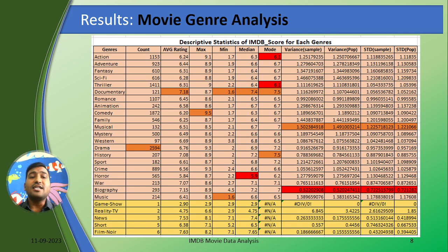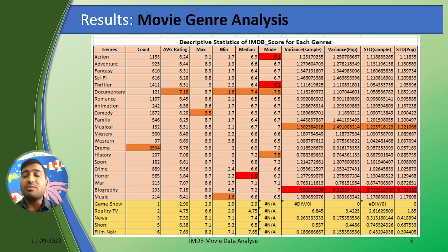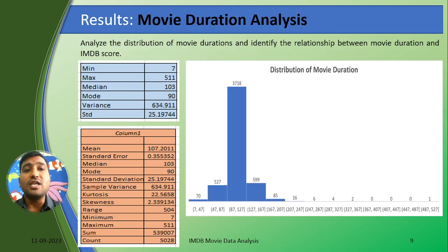Looking at the statistics table, I can see that the documentary category has the highest average rating, and the maximum rating has been recorded by the comedy category. But the horror category has the lowest median value. I also performed variance for both sample and population, as well as standard deviation for sample and population.